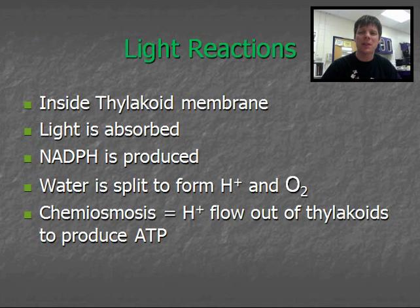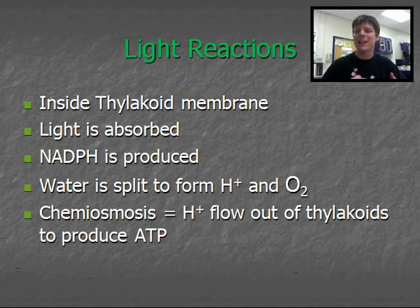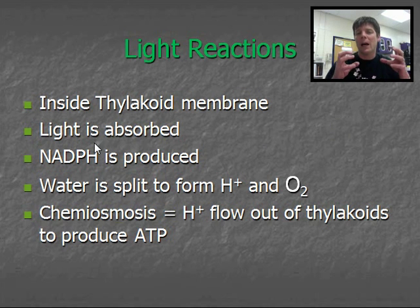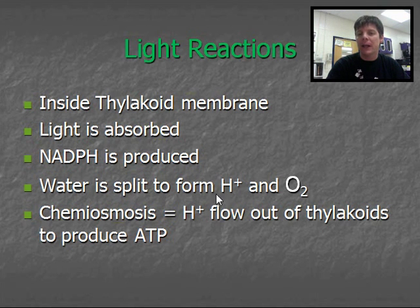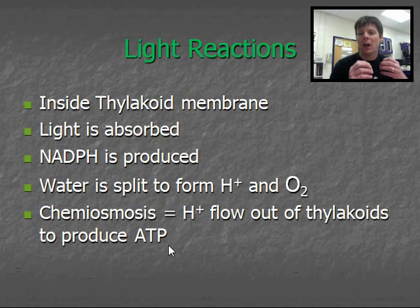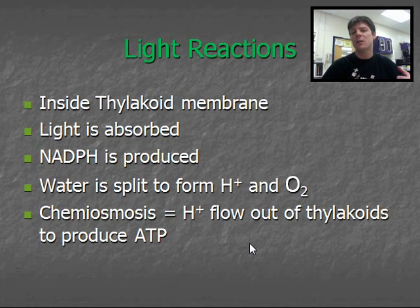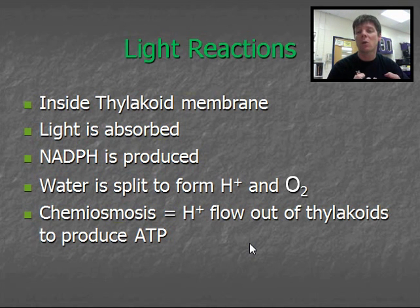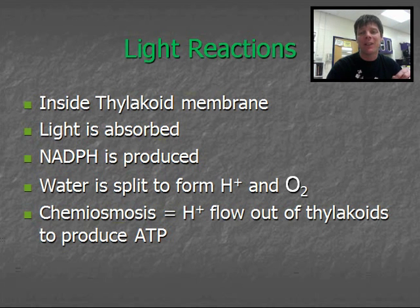Photosynthesis is actually two separate processes. The light reactions — and later we're going to be talking about the dark reactions, but first we'll focus on the light reactions. Just like the name sounds, these processes are dependent on light. They take place inside of the thylakoid membranes. This is when chlorophyll is going to absorb light, produce a molecule called NADPH, and water is going to be split to form hydrogen ions — and this is where oxygen gas is formed. In the next slide we'll discuss chemiosmosis, where hydrogen ions flow out of the thylakoids, driving the generation of ATP molecules. ATP molecules are incredibly important energy-storing molecules that cells can use to power their activities — you can think of ATP as instant energy.